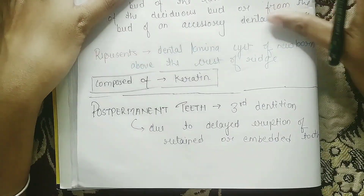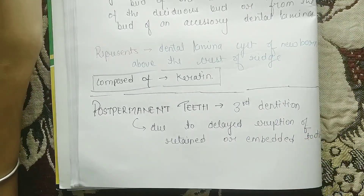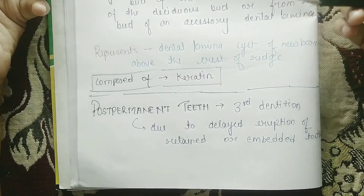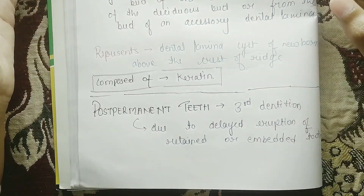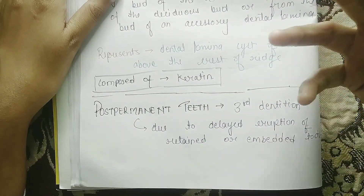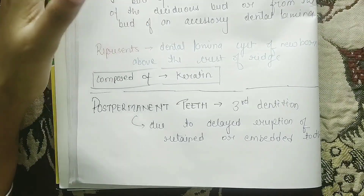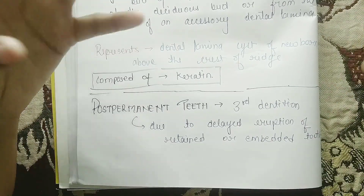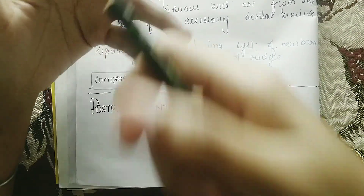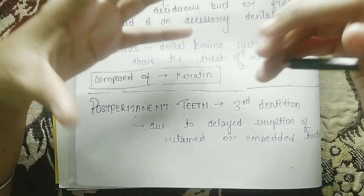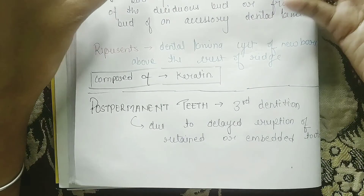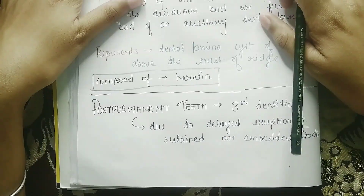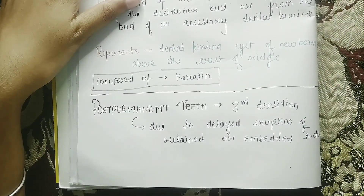Now coming to post-permanent teeth. After the first dentition (deciduous) and second dentition (permanent, 32 teeth), a third dentition can start — this is called post-permanent teeth. It is very rare and is due to delayed eruption of retained or embedded teeth in the permanent dentition, erupting after 33 years of development.